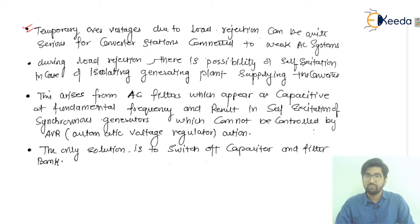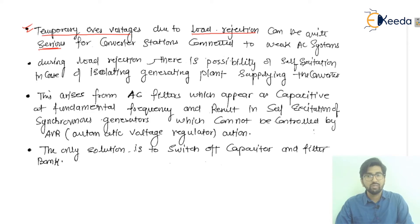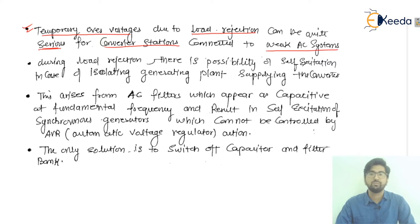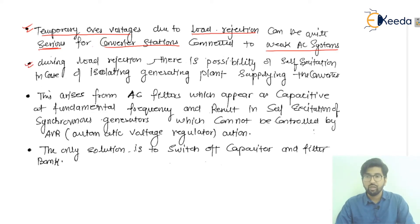Temporary overvoltages due to load rejection can be quite serious. If the load is rejected due to some disturbance, it can be dangerous for the system — especially for converter stations connected to a weak AC system. Whenever we have a weak AC system and the converter station is connected to it, temporary overvoltages can be quite dangerous.